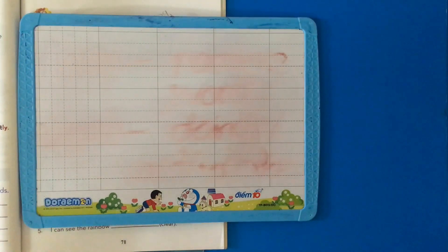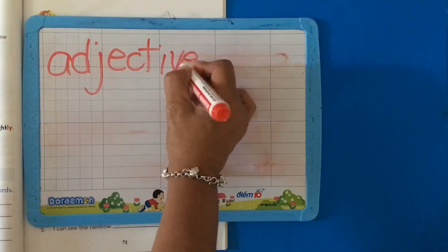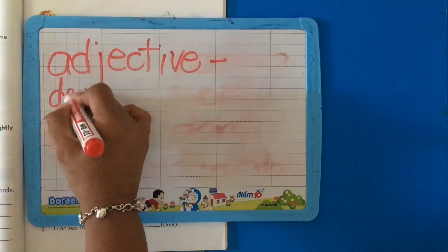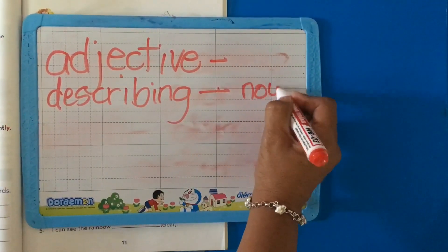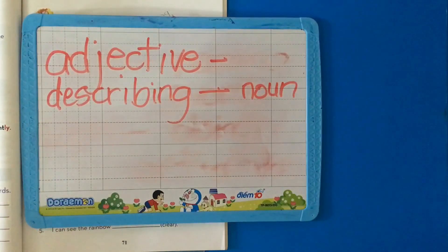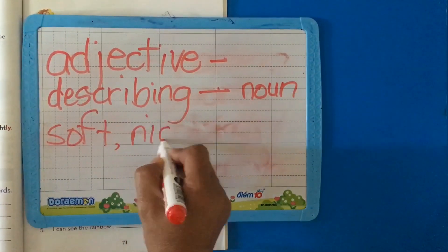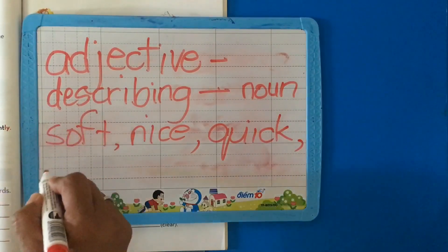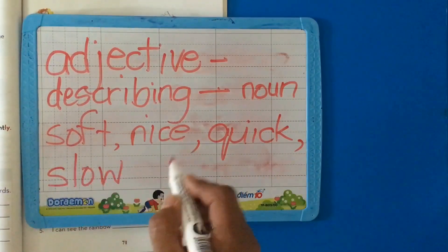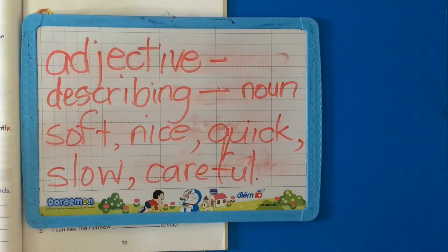What is an adjective? An adjective is a describing word and it describes the noun. Examples are soft, nice, quick, slow, careful. We can go on and on and on.